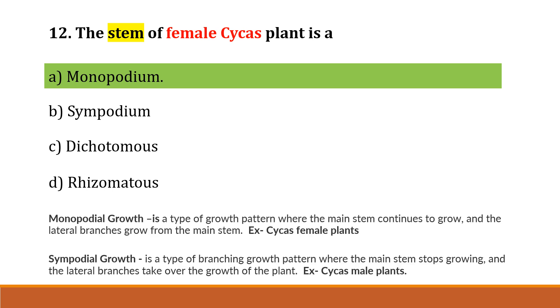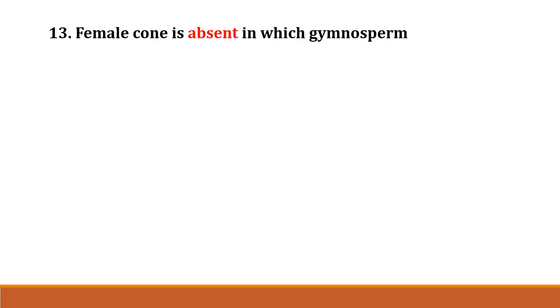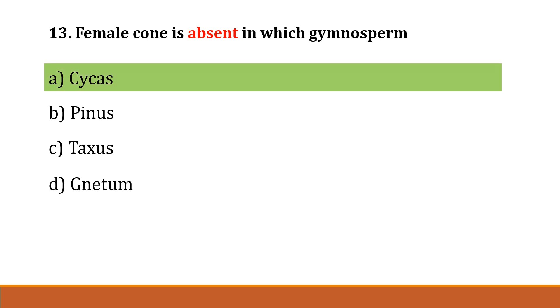Two types of growth are present in gymnosperms — monopodial growth and sympodial growth. Monopodial growth is a type of growth pattern where the main stem continues to grow and the lateral branches grow from the main stem. Question number 13: Sympodial growth is found in which gymnosperm? Option A: Cycas, Option B: Pinus, Option C: Taxus, Option D: Gnetum. The correct answer is Option A, Cycas.